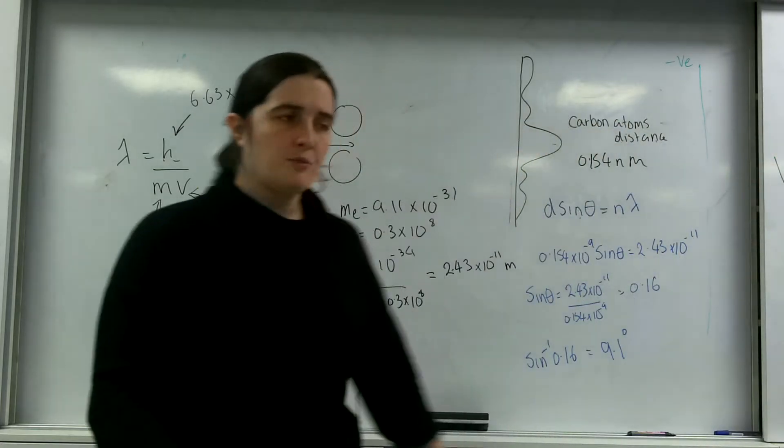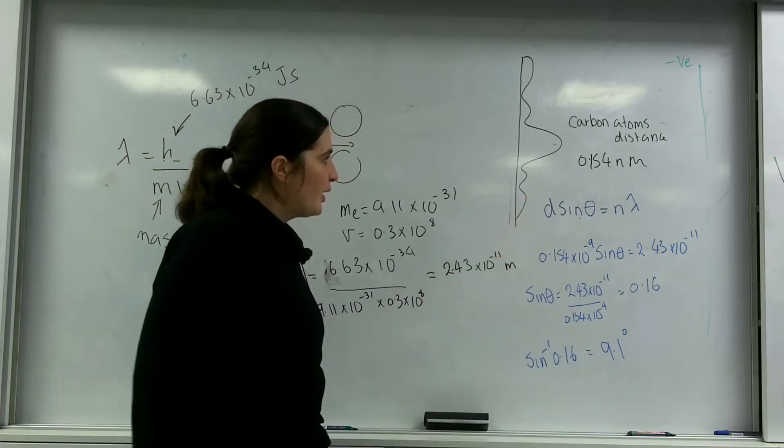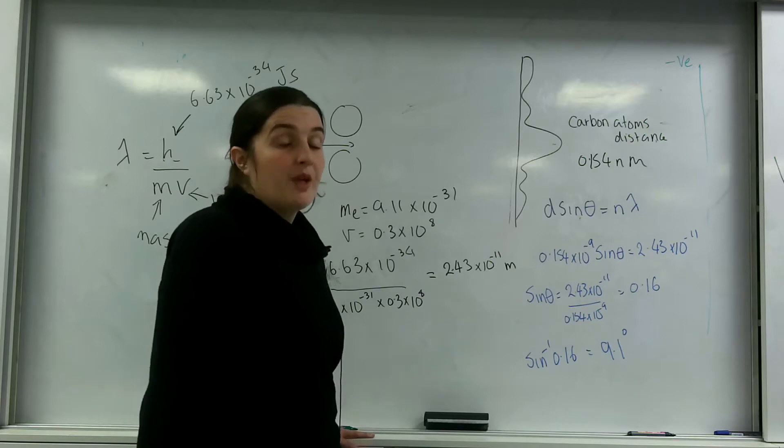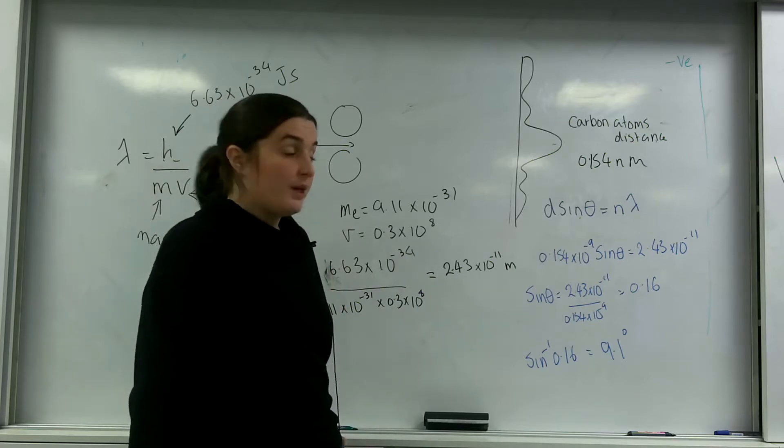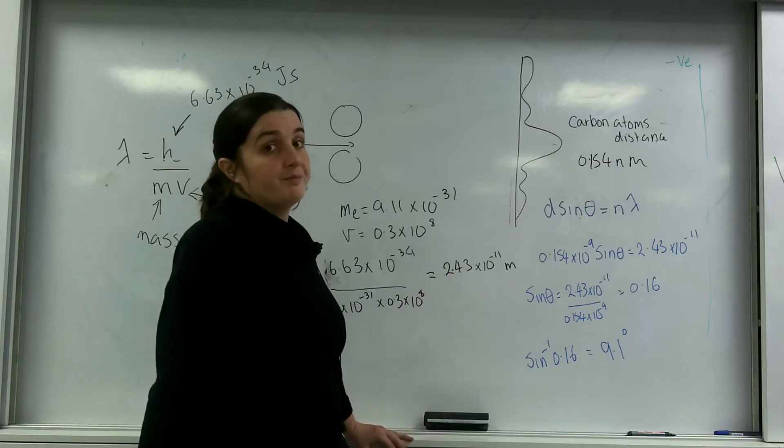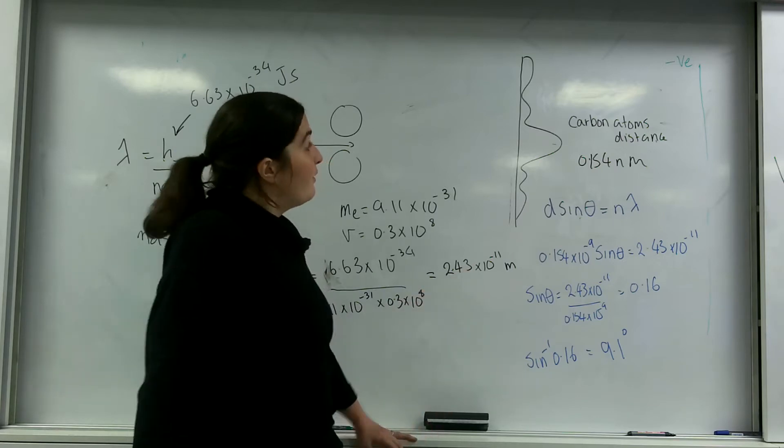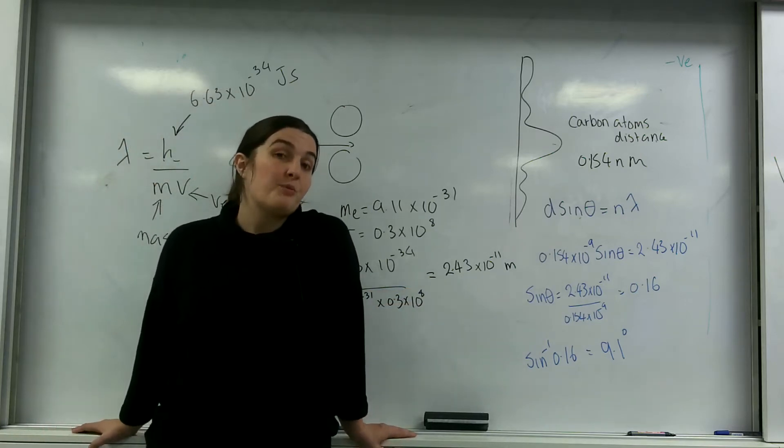That is very noticeable. 10 degrees is a very noticeable angle. In exam questions before, they have asked you to prove the angle and to say if it would be noticeable. 10 degrees is a very noticeable deflection. And that is an example of using diffraction grating equations with particle physics.